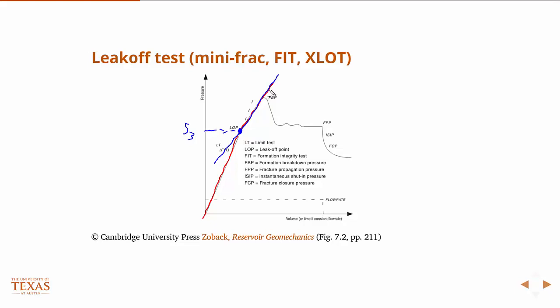If you're doing an extended leak-off test, you continue and eventually get to a point where the pressure drops. This is called the formation breakdown pressure. You see this inflection because you're injecting fluid at a constant rate — you've initiated a fracture, adding a little volume. You're still pumping fluid in faster than the fracture is growing, so pressure still goes up, but at the formation breakdown pressure, you're propagating a fracture faster than you can pump fluid in, and therefore the pressure drops.